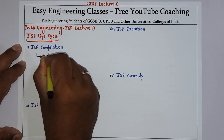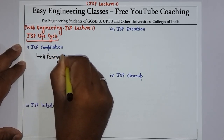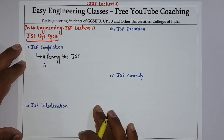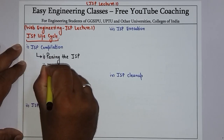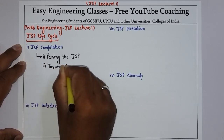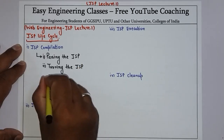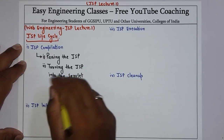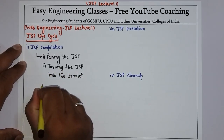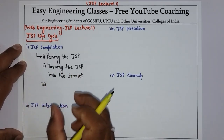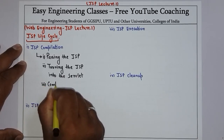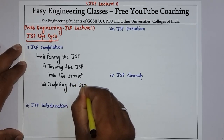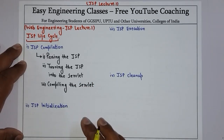The first step is parsing the JSP, which means checking the syntax of JSP and verifying all the classes and packages. The second step is turning the JSP into the servlet — the JSP page is converted into the servlet. The third step is compiling the servlet program. Once the servlet program is compiled, the request coming from the browser can be served with the help of this compiled servlet.